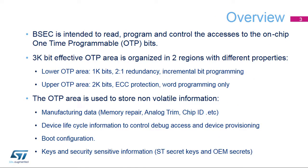The boot and security controller is intended to read, program, and control the accesses to the on-chip one-time programmable, or OTP bits. The 3-kilobit effective OTP area is organized in two regions with different properties. The lower OTP area is 1-kilobit with 2-to-1 redundancy and incremental bit programming. The upper OTP area is 2-kilobits with ECC protection and word programming only.